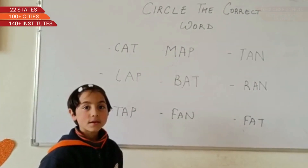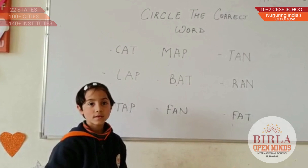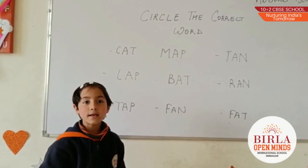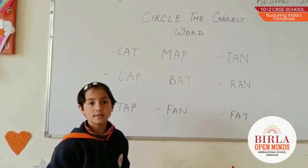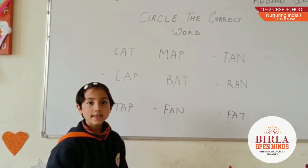Good morning, Saiba. Good morning, ma'am. What activity are we doing today? Circle the correct words. Okay. Can you circle AT family words? Yes, ma'am.